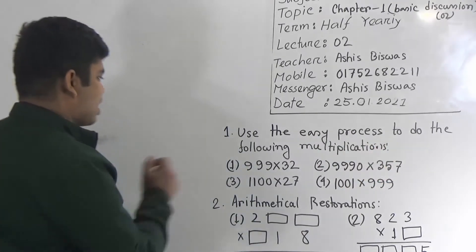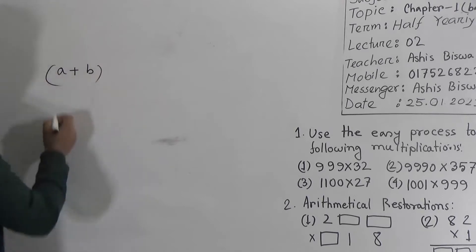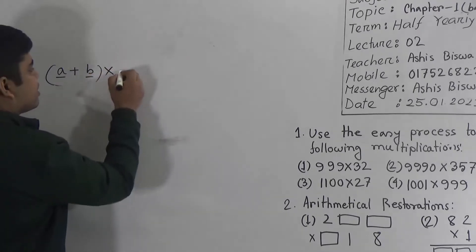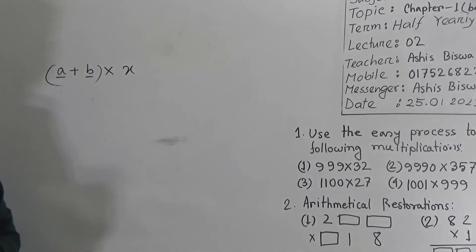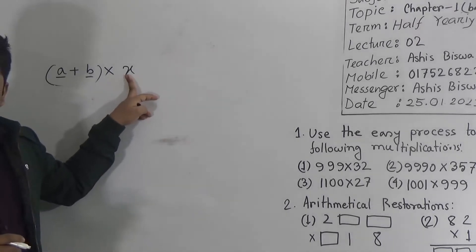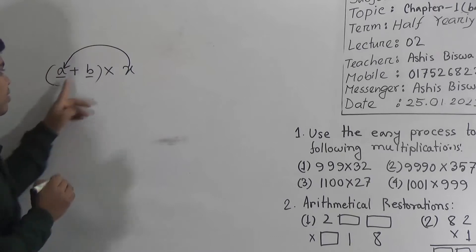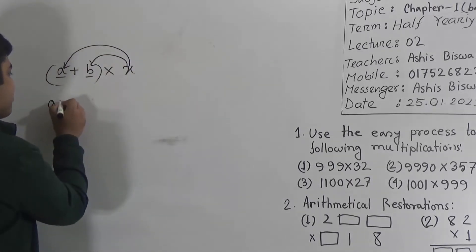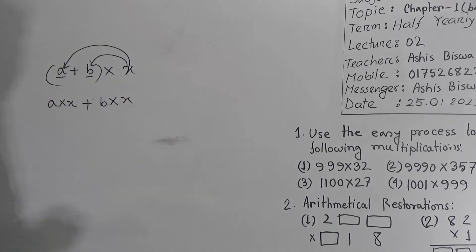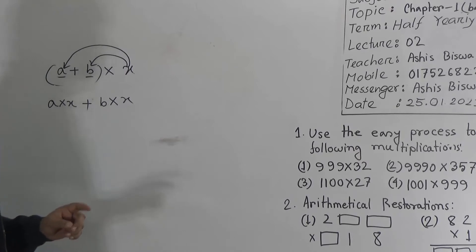So what is the easy process? Before starting to solve, I shall give you an example. Suppose A and B are two brothers and their father bought some chocolates — call it X — for them. This chocolate is distributed between both: it is given to A and also given to B. That means A multiplied by X, plus B multiplied by X. These two brothers get an equal number of chocolates.